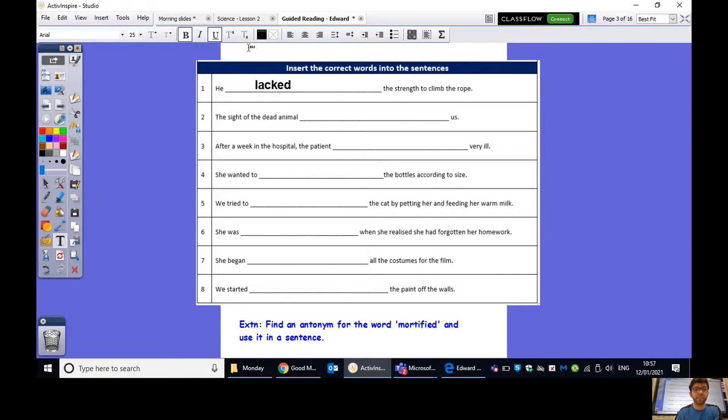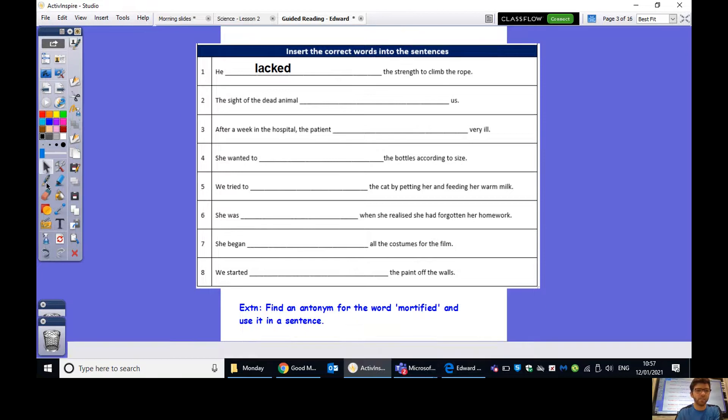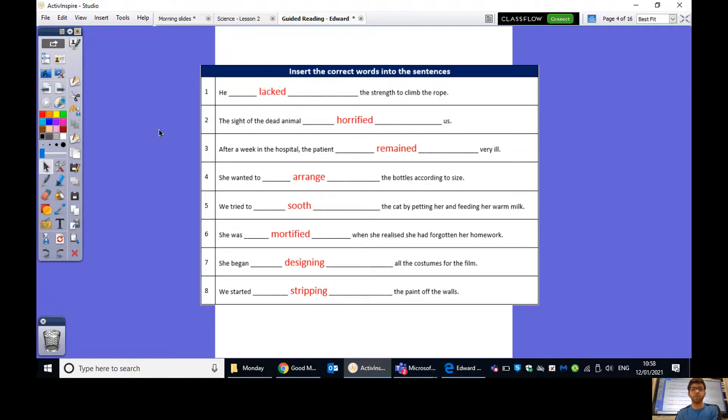Okay, so hopefully you've had a chance to complete that activity. Let's go through some of the answers. So, as we said, he lacked the strength to climb the rope. The sight of the dead animal horrified us. After a week in the hospital, the patient remained very ill. She wanted to arrange the bottles according to size. We tried to soothe the cat to try to relax the cat by petting her and feeding her warm milk. She was mortified when she realized she had forgotten her homework. She began designing all the costumes for the film. And then finally, we started stripping the paint off the walls. Really excellent job there, guys.